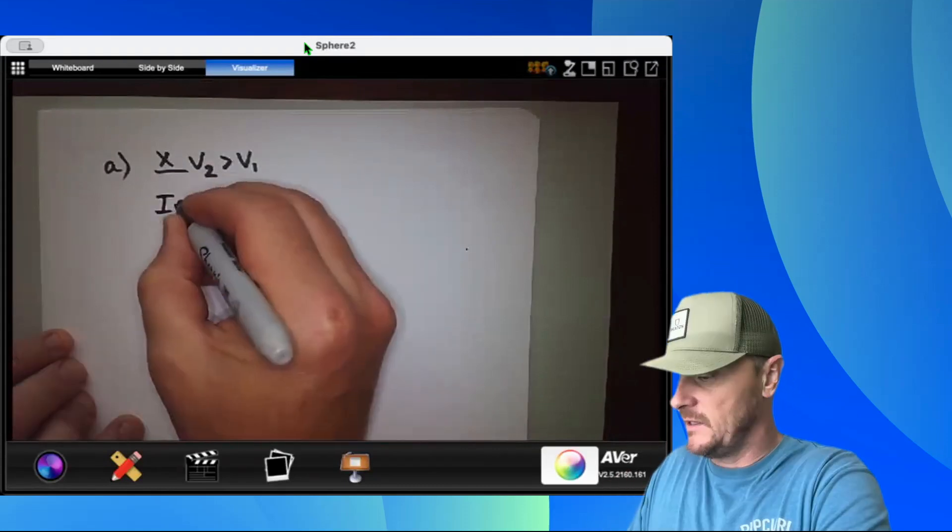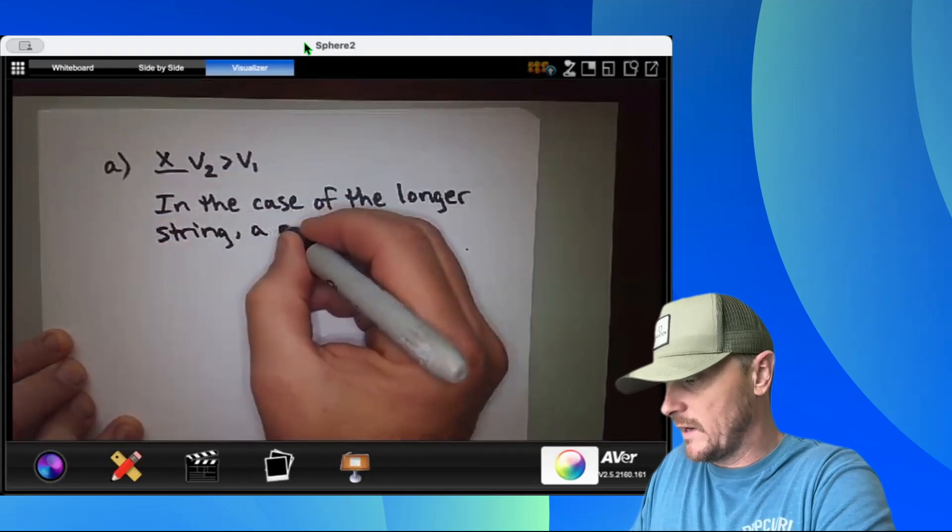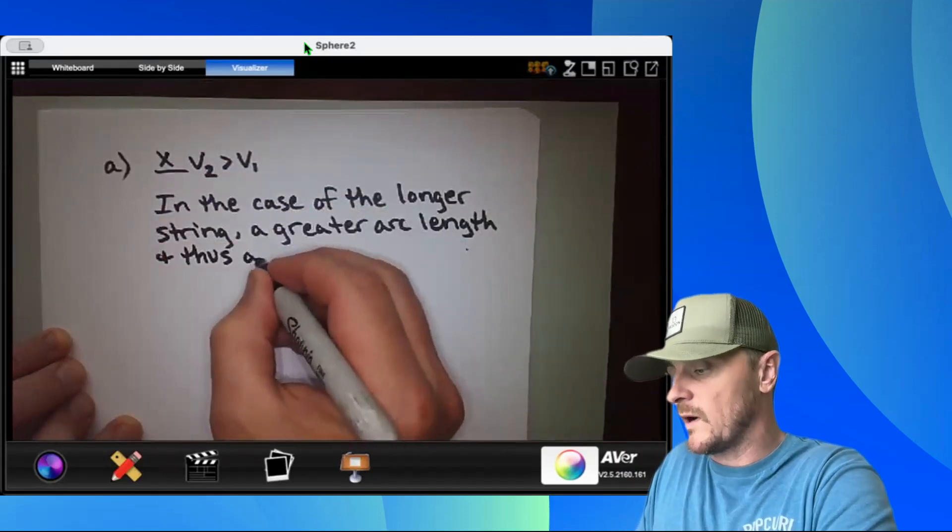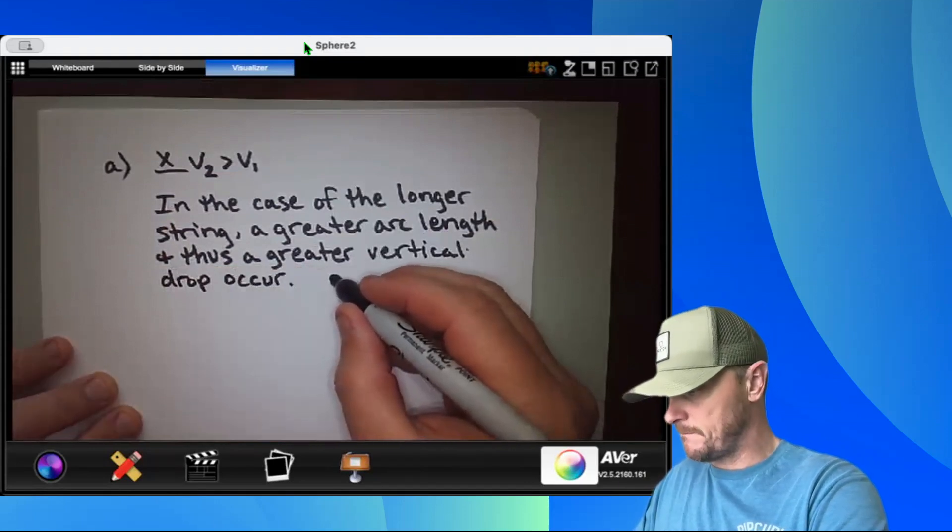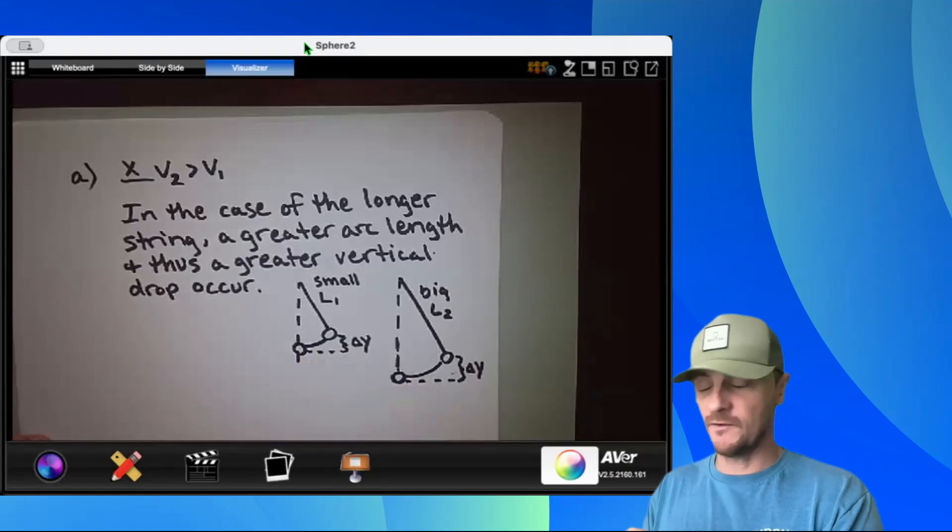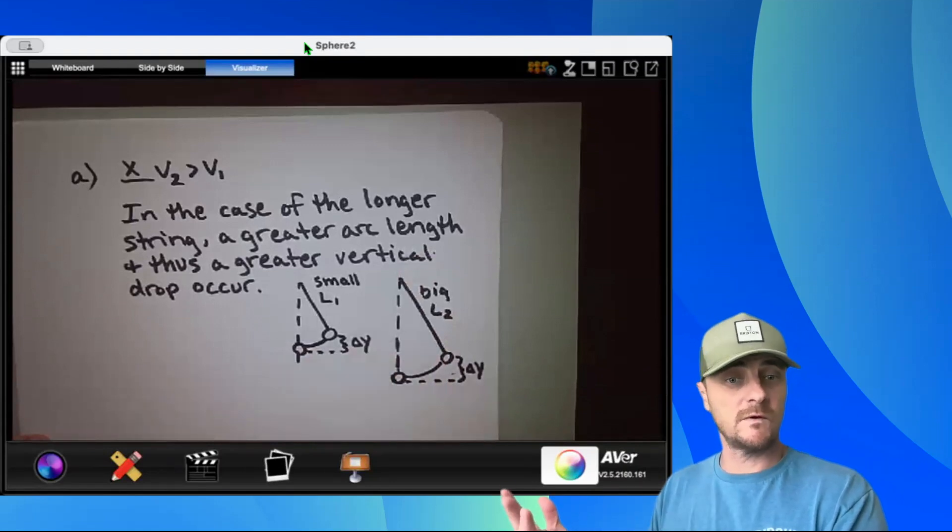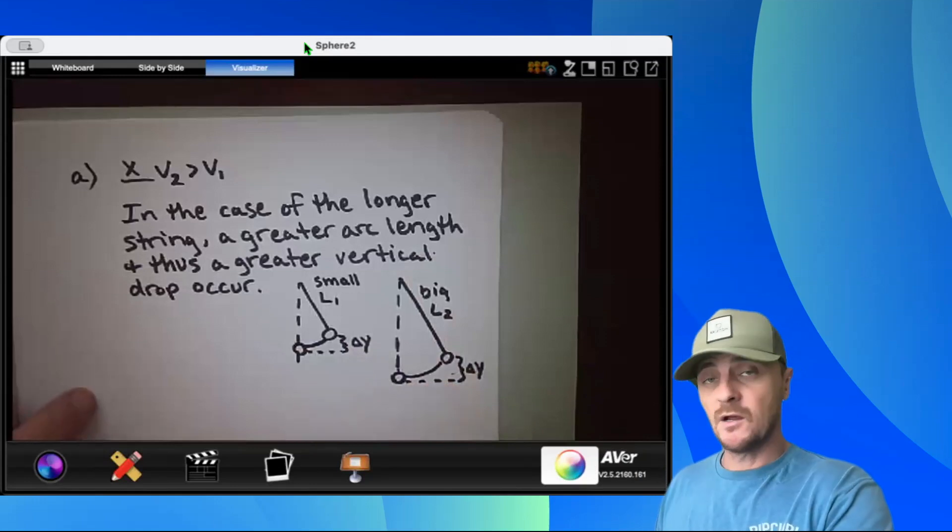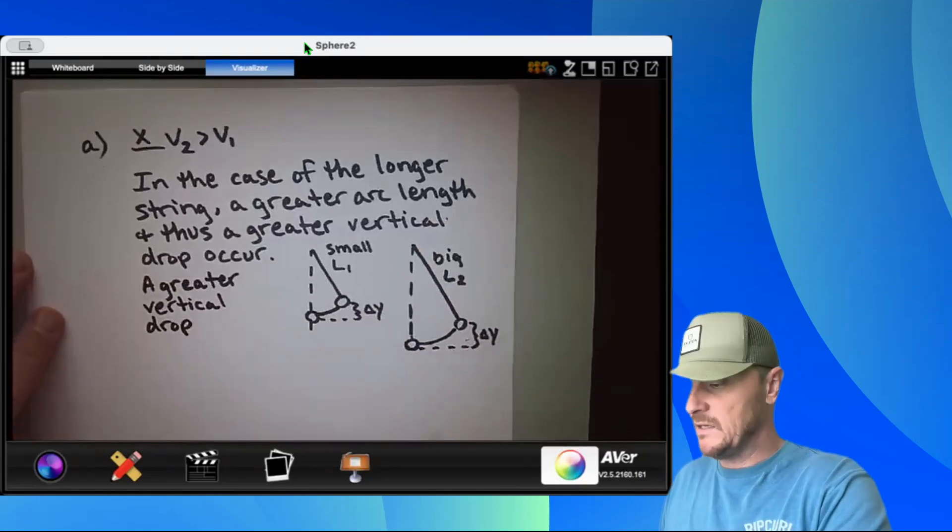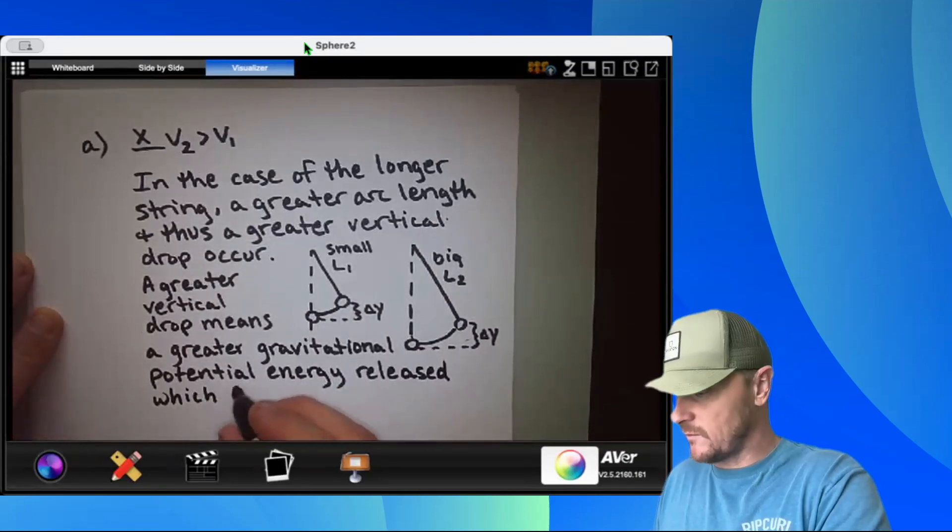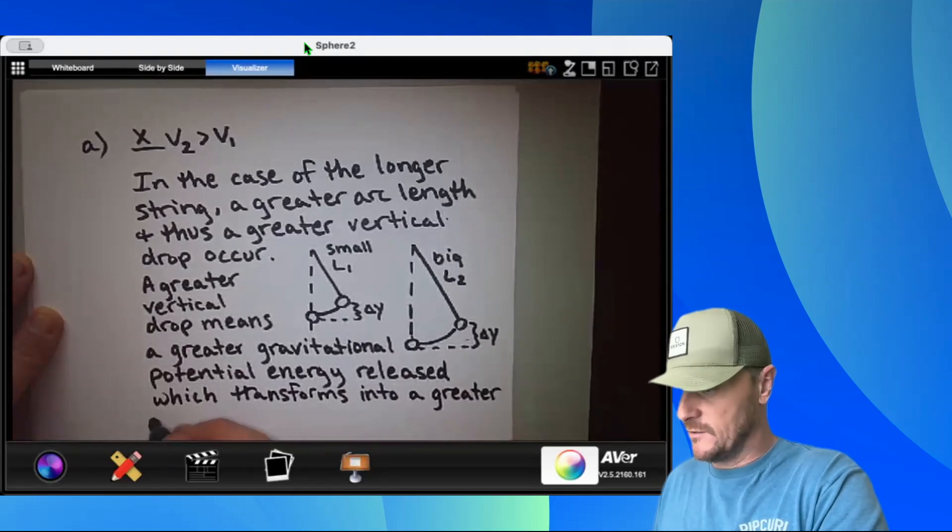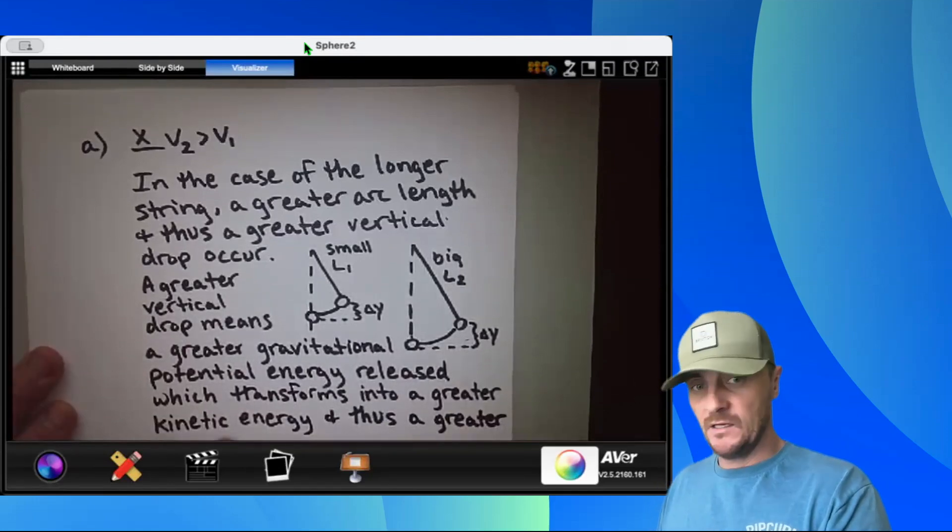Now let's qualitatively justify. In the case of the longer string, a greater arc length and thus a greater vertical drop occur. And I'm going to do a little side-by-side to show them. So there's my diagrams and they're proving the point perfectly because we see we have a greater vertical drop with the longer string. And this is okay to do because we're being told to do this qualitatively or descriptively. I'm not showing math, I'm just showing diagrams. I'm going to go on to say a greater vertical drop means a greater gravitational potential energy released, which transforms into a greater kinetic energy and thus a greater velocity for the longer string.